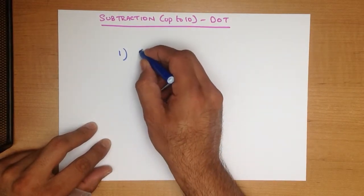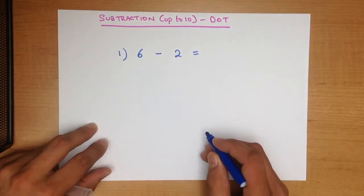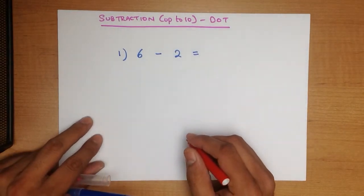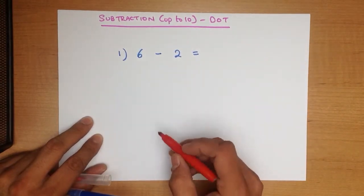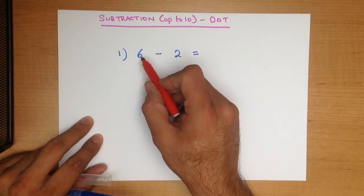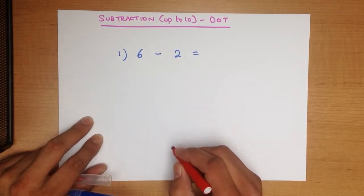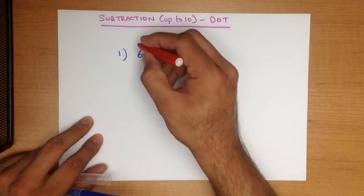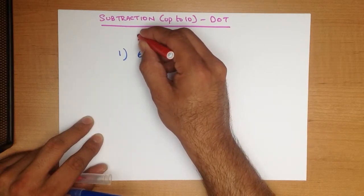What is 6 minus 2? How do we calculate 6 minus 2 using the dot method? Well, the first number, what we do is above the first number we write down how many dots represent the first number. Here the number is 6, so we put 6 dots directly above it.